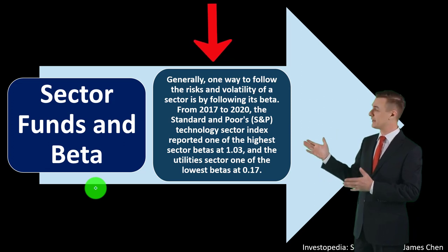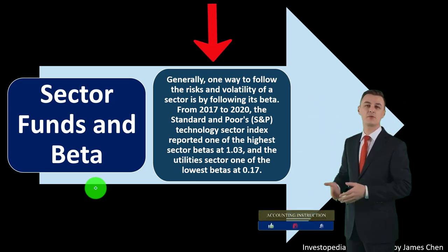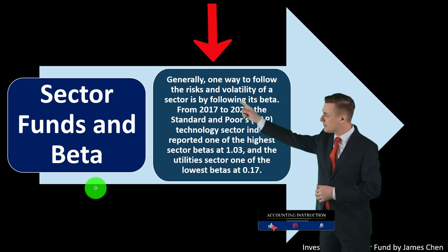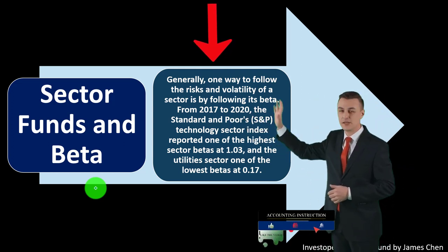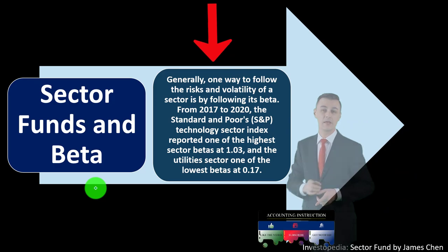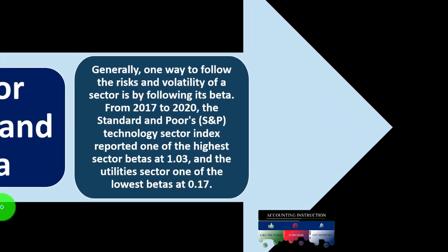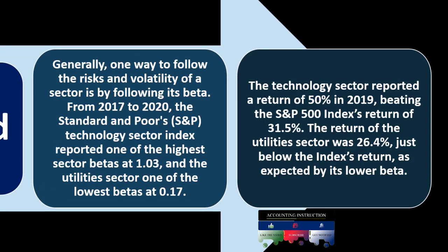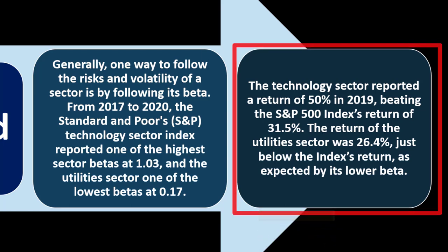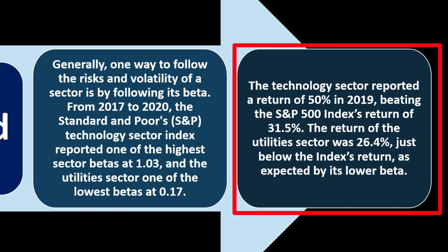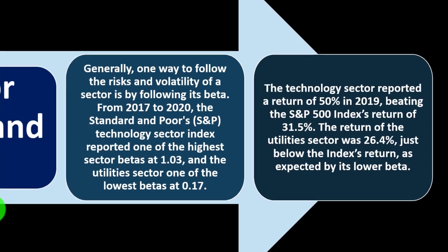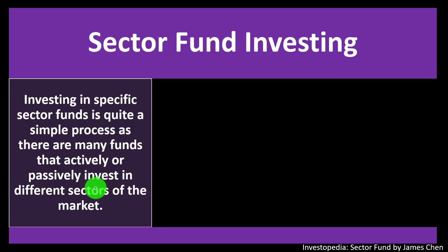One way to follow the risk and volatility of a sector is by its beta. From 2017 to 2020, the S&P technology sector index reported one of the highest sector betas at 1.03, while the utility sector had one of the lowest at 0.17. The technology sector returned 50% in 2019, beating the S&P 500's return of 31.5%. The utility sector returned 26.4%, just below the index's return, as expected given its lower beta.